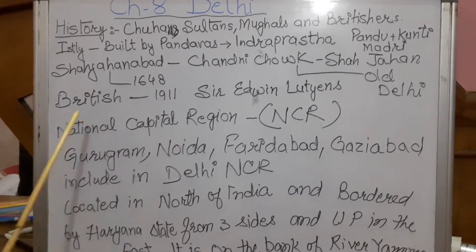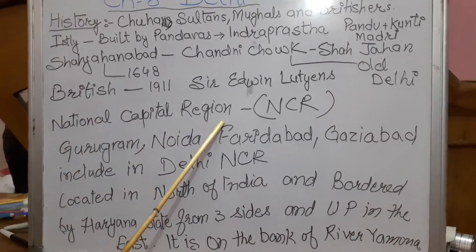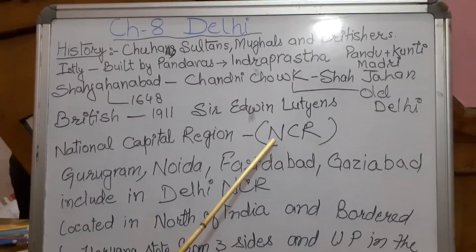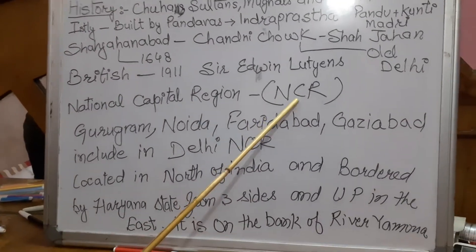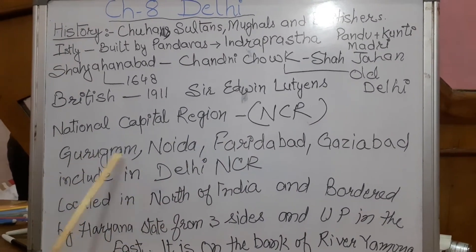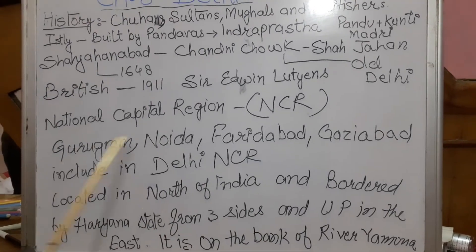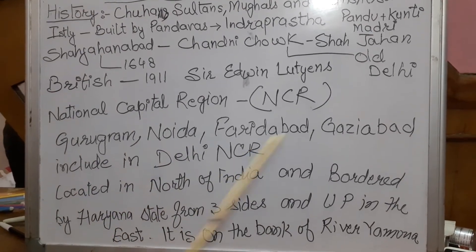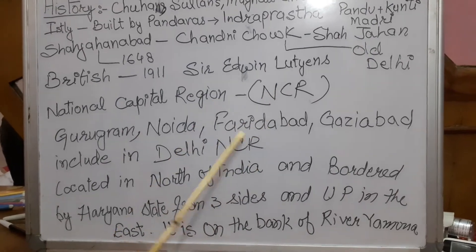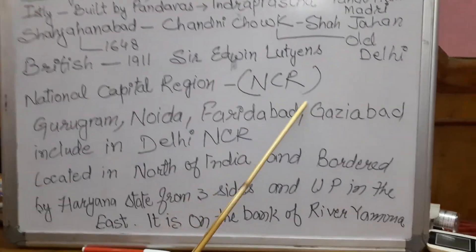Now we will talk about the National Capital Region, which means Delhi NCR. This NCR includes many neighboring cities like Gurugram, Noida, Hyderabad, Ghaziabad, and many other cities. All these cities are included in Delhi NCR.